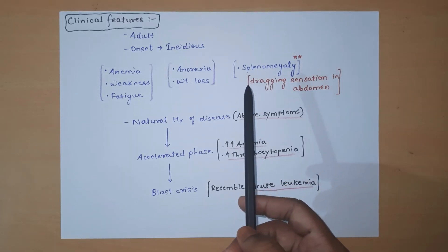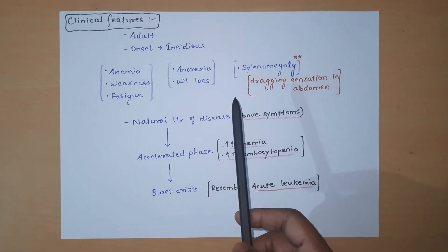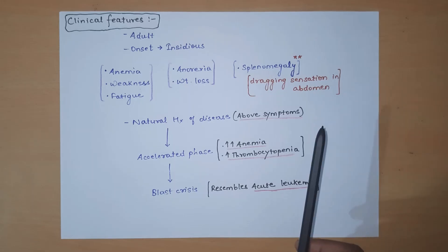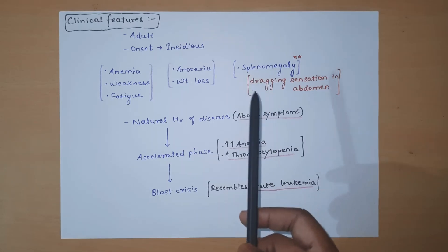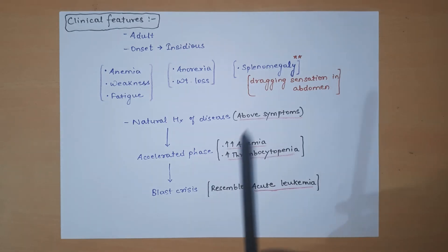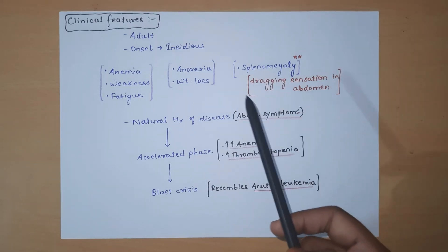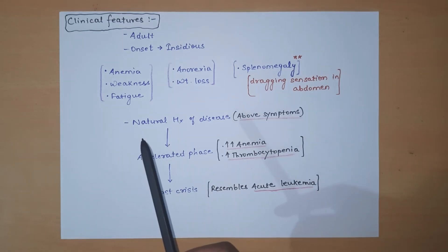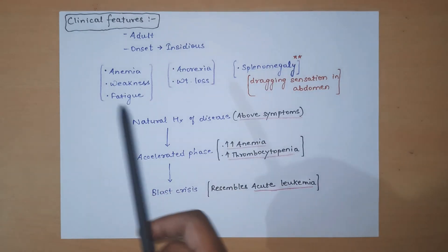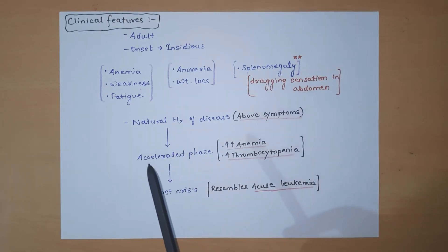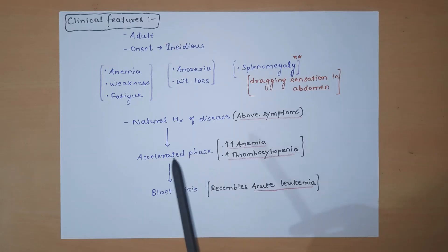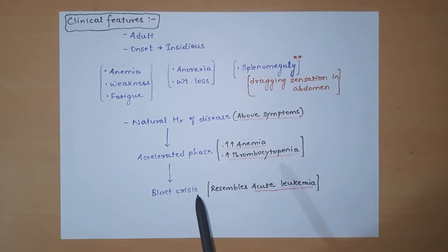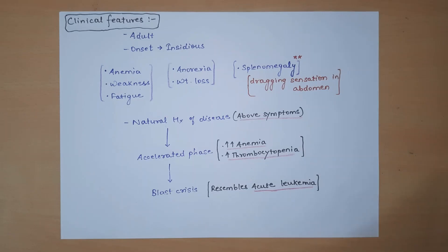Splenomegaly in CML is appreciated by the dragging sensation in the abdomen. We can also see splenic infarct in patients of CML — the splenomegaly is to such an extent that it can lead to splenic infarction. When the disease is in the natural history stage, symptoms are mostly prominent. When it progresses to the accelerated phase, anemia and thrombocytopenia worsen significantly. When the patient reaches blast crisis, myeloblasts or lymphoblasts exceed 20 percent, resembling acute leukemia.